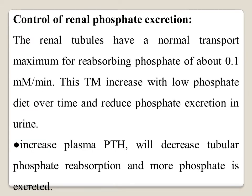Regarding renal phosphate excretion, the renal tubules have a normal transport maximum for phosphate reabsorption of about 0.1 millimolar per minute. This transport maximum increases when there is a low phosphate diet over time, leading to reduced phosphate excretion in the urine and increased phosphate reabsorption. Increased plasma parathyroid hormone leads to decreased tubular phosphate reabsorption and more phosphate excretion.